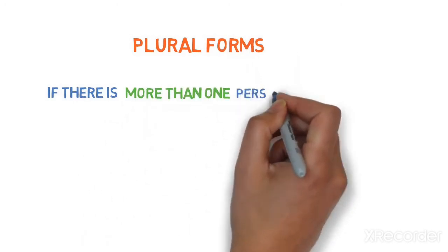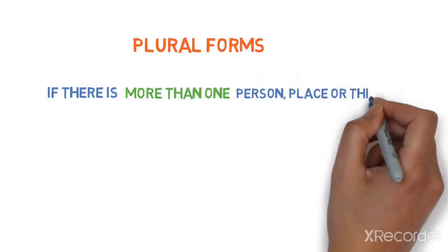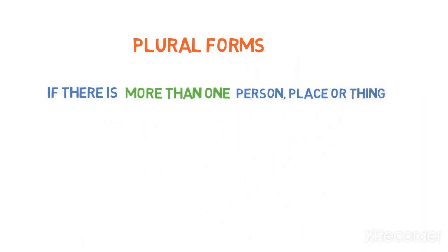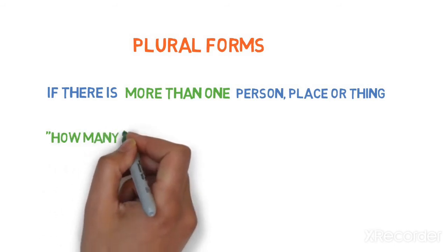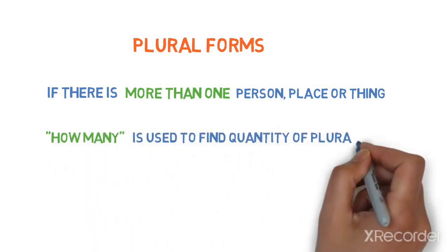Now let's see the plural forms. If there is more than one person, place, thing involved, then we can call them as plural forms. How many is used to find the quantity of plural forms.